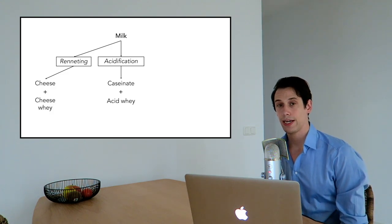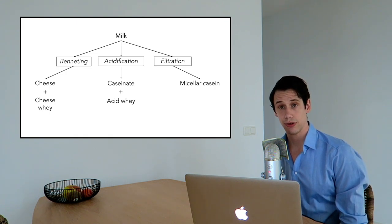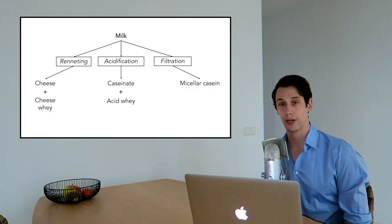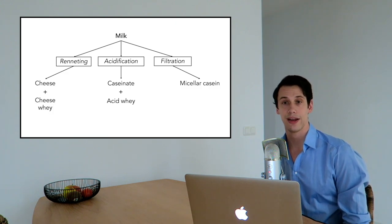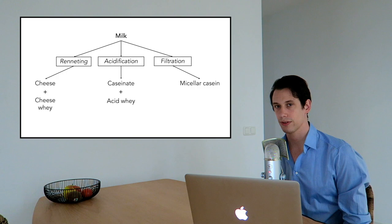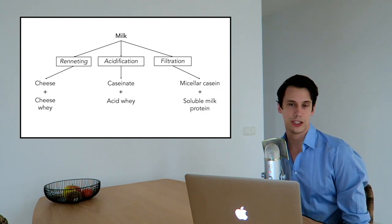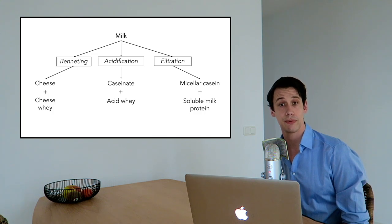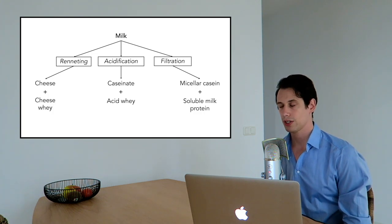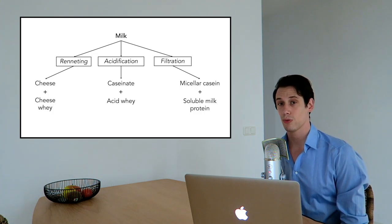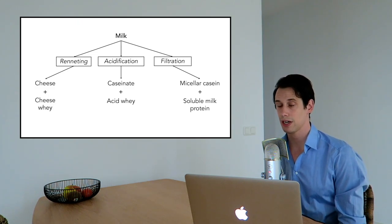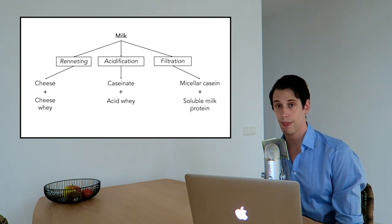And a third way is to filtrate your milk and micellar casein proteins who are the biggest, you can filtrate them out and then you're left with what's called soluble milk protein which is just another type of whey protein. So you can see we have three different ways to produce whey proteins and these three types of ways are not exactly the same.